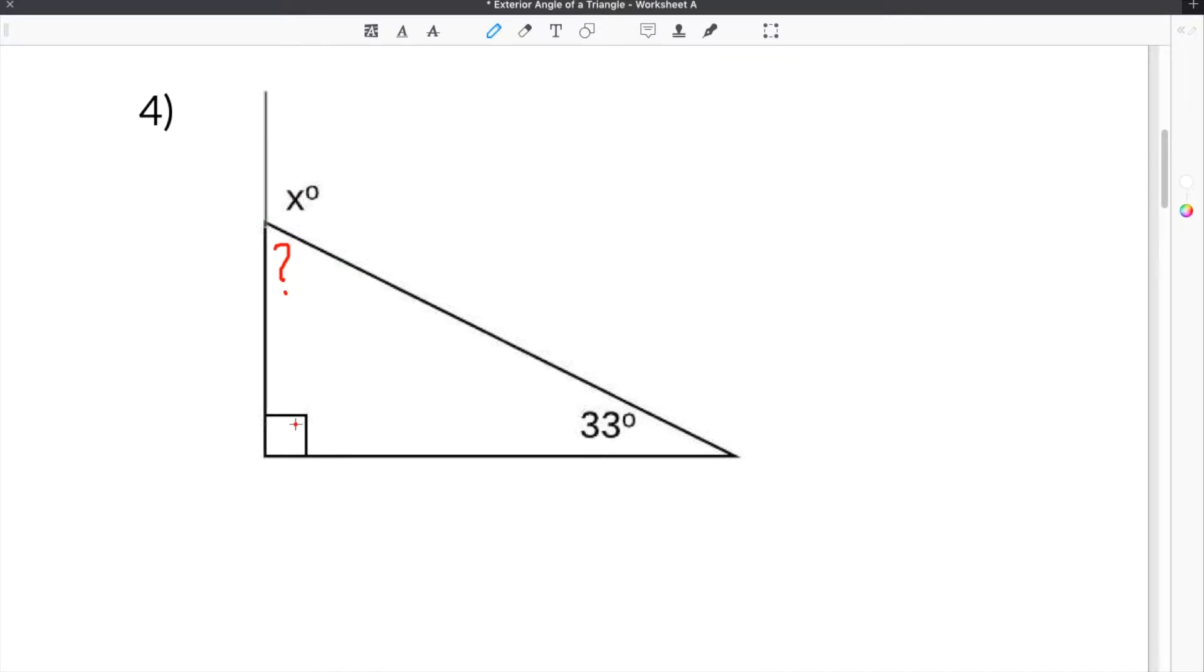So the easiest way to do this is to take the two opposite or non-adjacent angles from the exterior angle and add them together. In the case of this triangle, we have a right angle here, which is of course 90 degrees, and we also have 33 degrees.